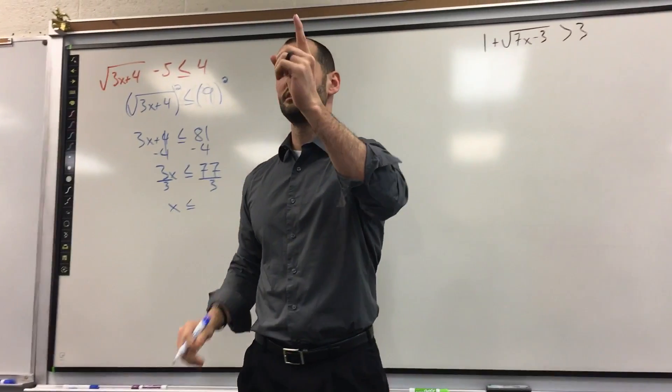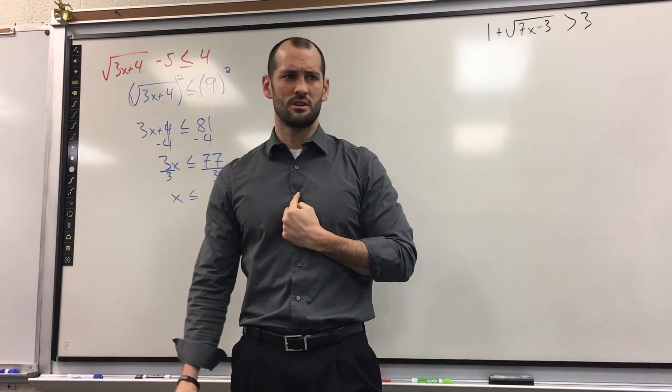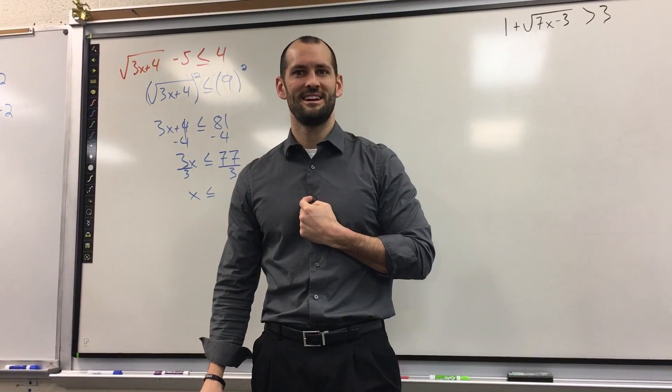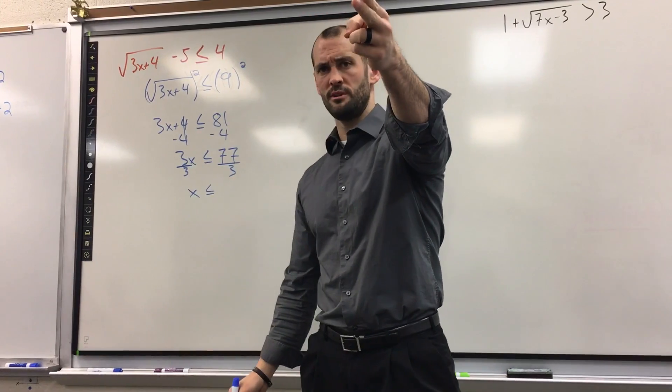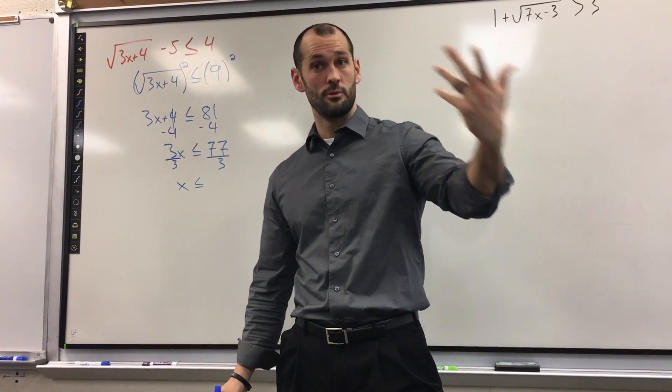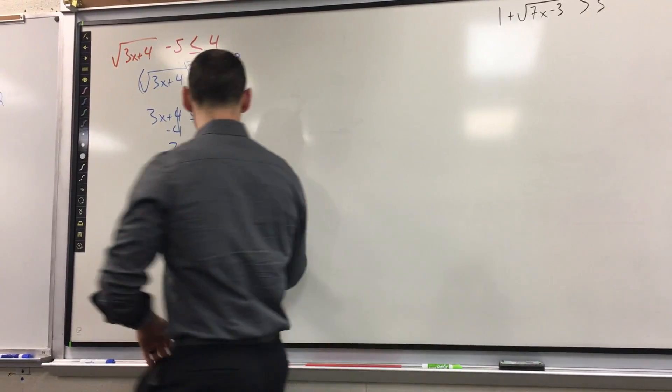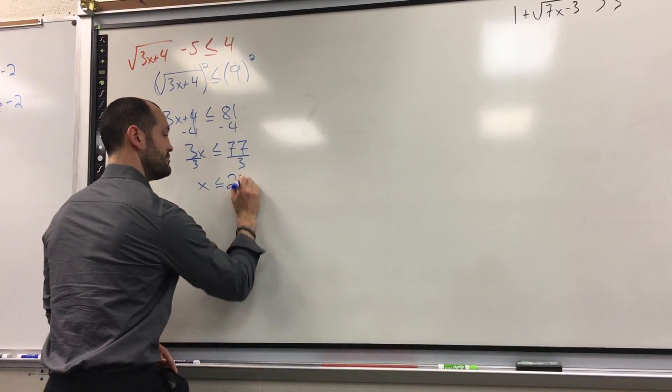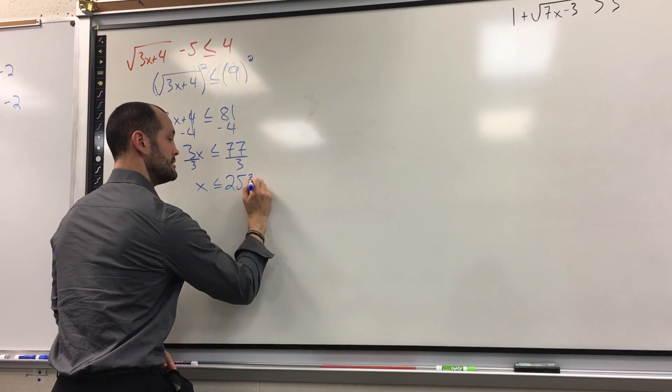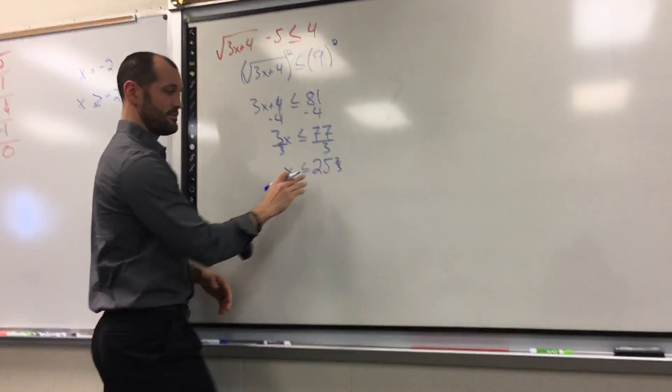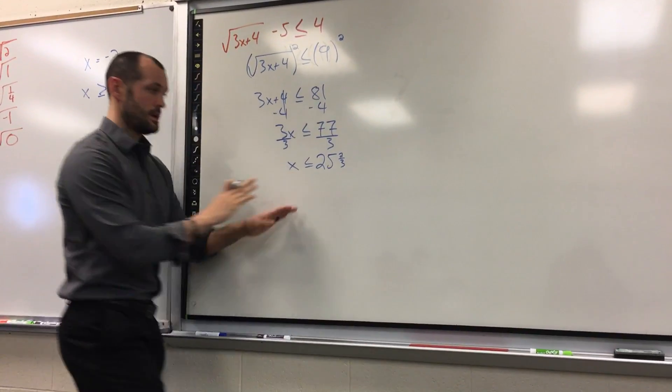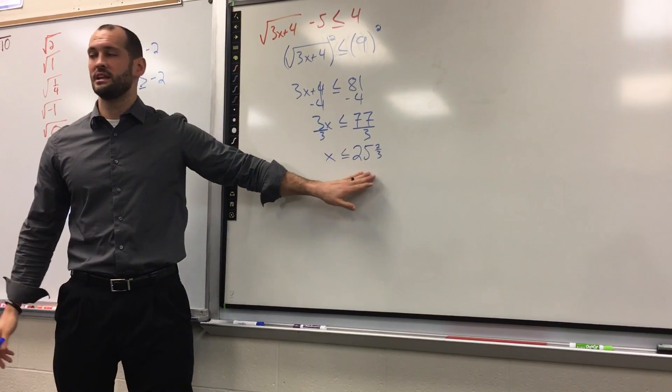Okay. So I got three options here. You can put 77 over 3, which is not my favorite because I don't know where that is, because you're going to be graphing today. Second, you could have what did you say, 25.67 probably if we were actually round. Or 25 and 2 thirds? What? Is that what you got? Was it 25? Yes.